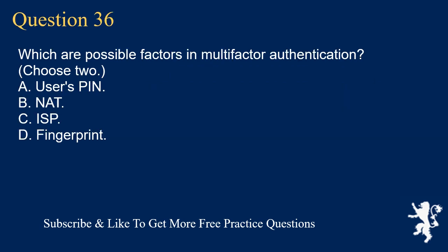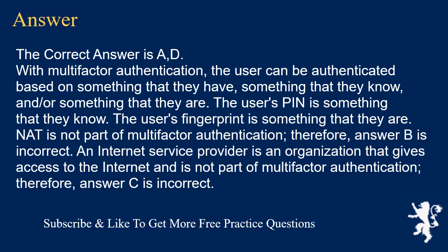Question 36. Which are possible factors in multi-factor authentication? Choose 2. A. User's PIN. B. NAT. C. ISP. D. Fingerprint. The correct answers are A and D. With multi-factor authentication, the user can be authenticated based on something that they have, something that they know, and/or something that they are. The user's PIN is something that they know. The user's fingerprint is something that they are. NAT is not part of multi-factor authentication. Therefore, answer B is incorrect. An internet service provider is an organization that gives access to the internet and is not part of multi-factor authentication. Therefore, answer C is incorrect.